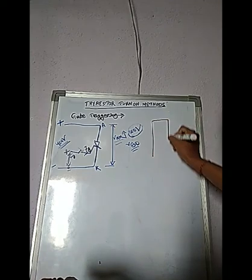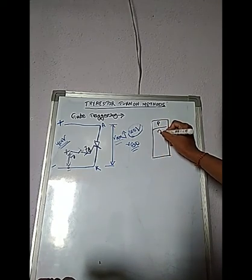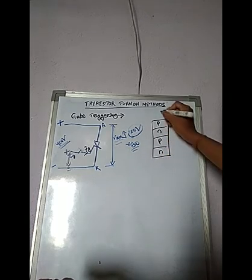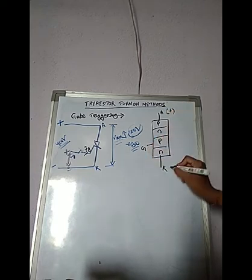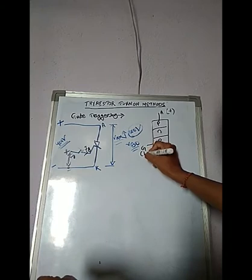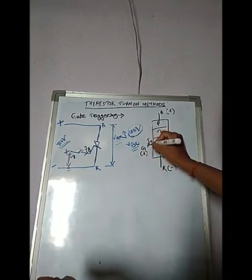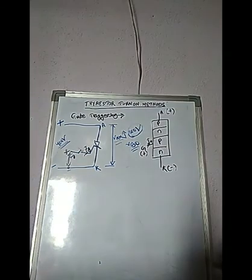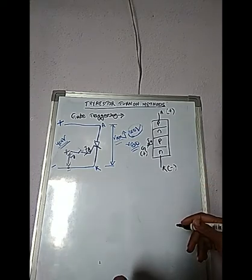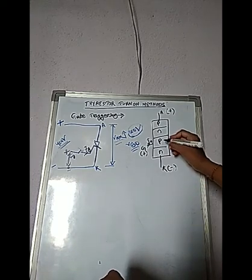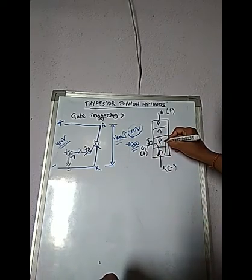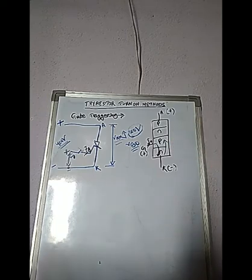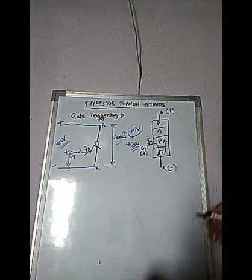When gate current is established, charges are injected into the inner P layer. Looking at the layer diagram — anode, J1, J2, J3, cathode, with the gate connected to the inner P layer — when gate voltage is applied and gate current flows, electrons are injected into the inner P layer in the direction from cathode toward gate.